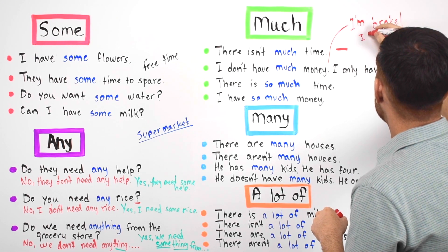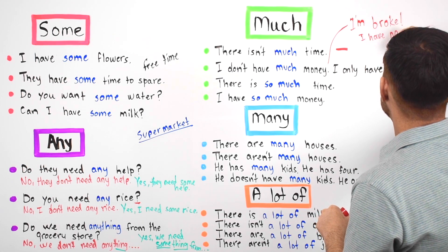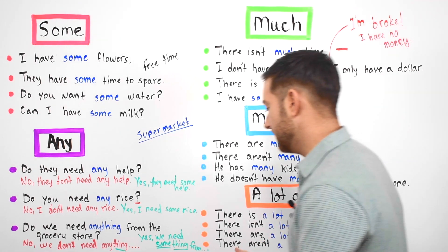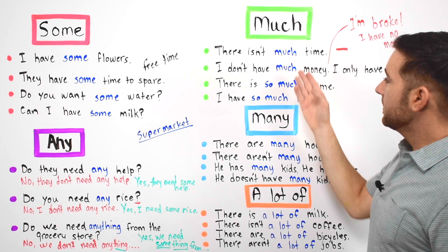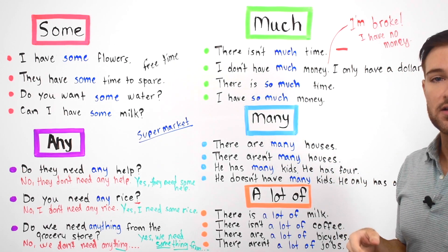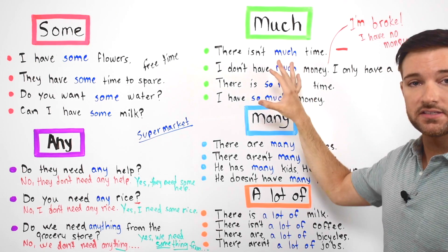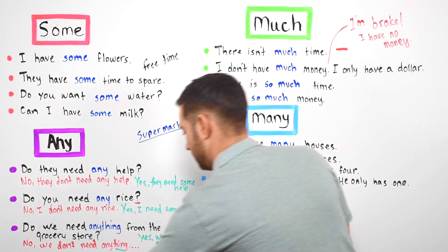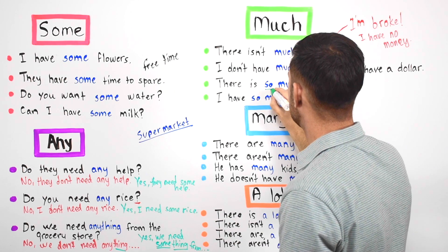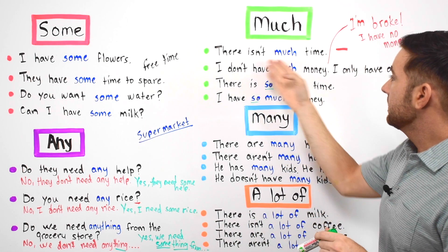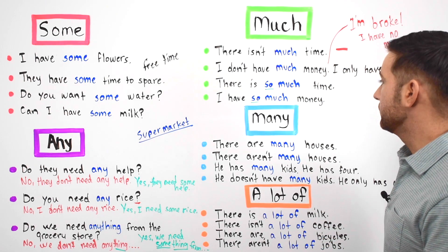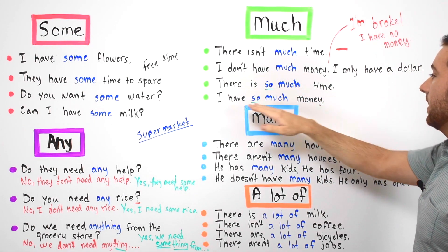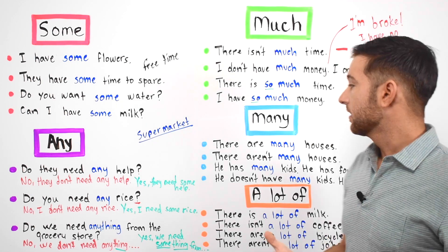If you want to make these positive, you can use 'much' with the word 'so' in front of it. So instead of saying 'There isn't much time,' you could say 'There is so much time.' And instead of saying 'I don't have much money,' you could say 'I have so much money,' meaning you have a lot of money.